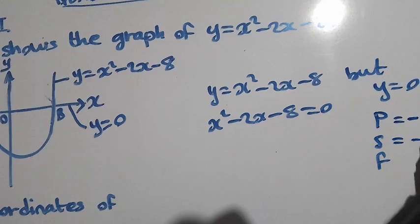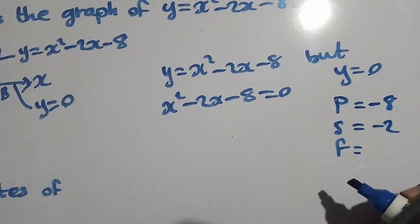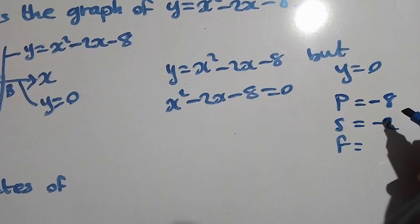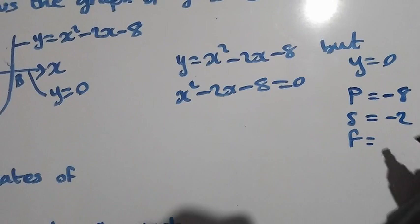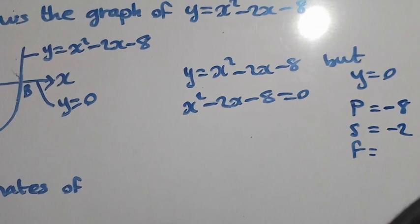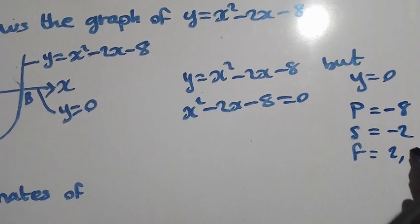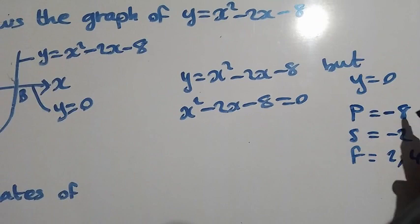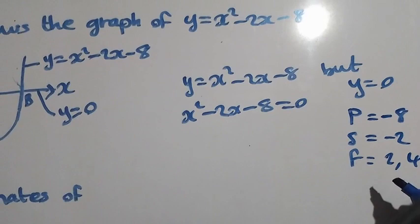The sum is negative 2. For the factors, we need to look for two numbers that multiply to give negative 8 and add to give negative 2. The two numbers are 2 and 4, because 2 times 4 is 8, and 4 minus 2 is 2.